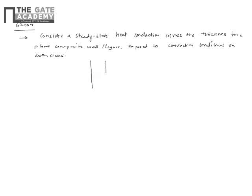It's a composite wall made of two materials, one and two. You have a convective coefficient h_i on the inside and h_o on the outside. Two things are important: the ambient temperature and the heat transfer coefficient on each side. The wall has lengths l1 and l2.